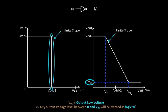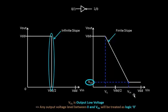Any voltage above VIH — let's consider VIH as three-fourths of VDD, which is around 750mV — so any voltage at the input of the inverter between 750mV and 1V will be recognized as logic 1 at the input side.